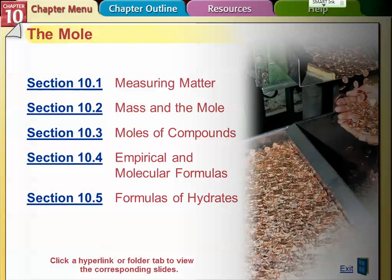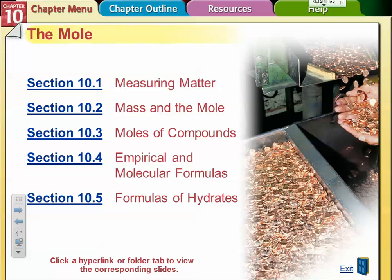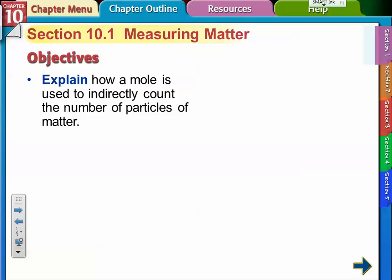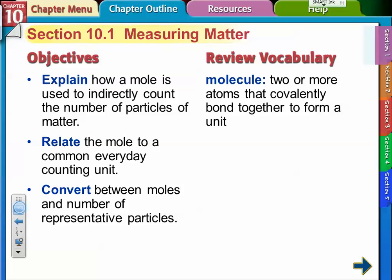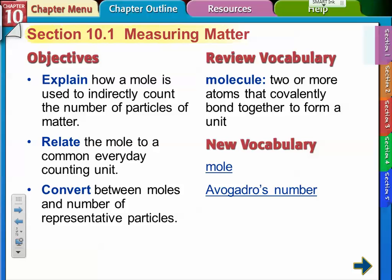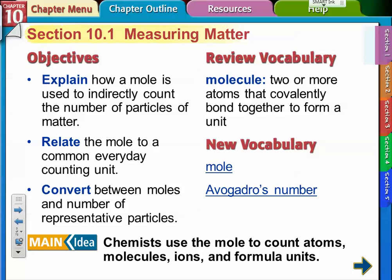We're going to talk about Chapter 10 in chemistry — the mole. Section 10.1 introduces what the mole is. It's not the dark thing on your skin or the animal that digs in your lawn. We're going to talk about the mole, Avogadro's number, and how to use the mole to convert between moles and representative particles. The mole is used to count atoms, molecules, ions, and formula units.